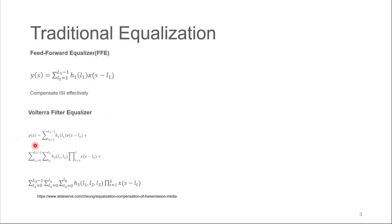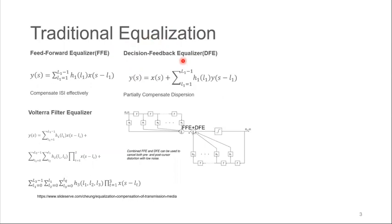Traditionally, there are several equalization methods for distortion compensation. For example, the feed-forward equalizer basically creates several delayed versions of the input signal and then adds them back with proper weights. The feed-forward equalizer can compensate the inter-symbol interference effectively. Another is called the Volterra filter. It uses the polynomials of a delayed version of the signal, which we call taps, and adds them together with proper weights. The first term here compensates the linear inter-symbol interference, and the others are compensating the nonlinear terms. Also, we have the decision feedback equalizer. It adds the feedback and quantization during the equalization process, and the combination of the FFE and this DFE is the most common approach in the intensity modulated direct detection system.